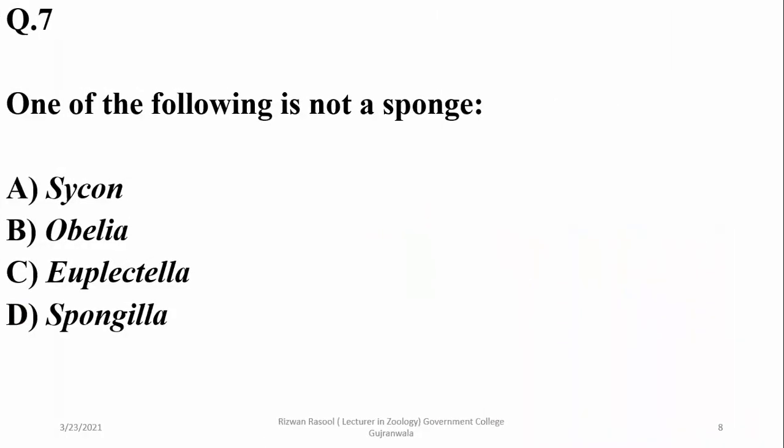Question six: sycon, euplectella, and spongilla are sponges, but obelia is a cnidarian. So the right option is beta — obelia is not a sponge.